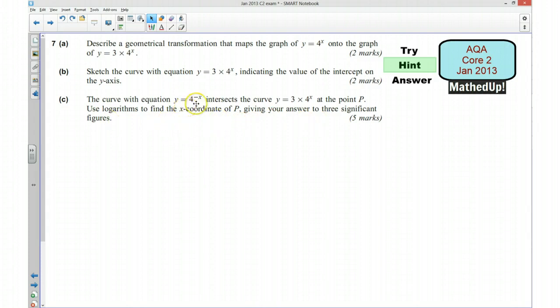So what we're looking to do is use simultaneous equations in some ways. If I know that y is equal to 4 to the negative x and it's equal to this here, then this must be equal to this. I can then decide how I'm going to use logarithms to end up solving this equation. OK, so if you'd like to have a go at the question now and pause the video.